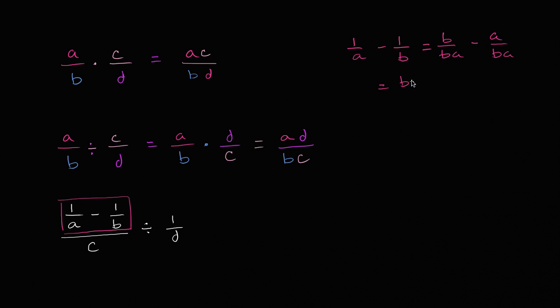So this is going to be equal to b minus a over ab. So this is going to be equal to this numerator right over here, b minus a over ab, and then if I'm dividing it by c, that's the same thing as multiplying by the reciprocal of c. So if I'm dividing it by c, that's the same thing as multiplying times one over c.